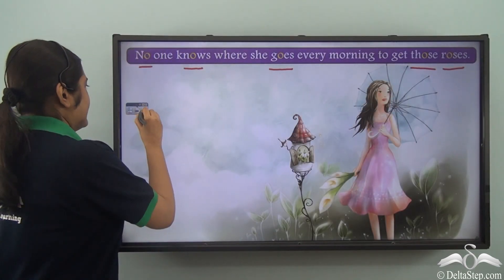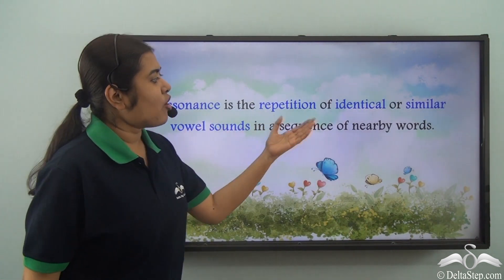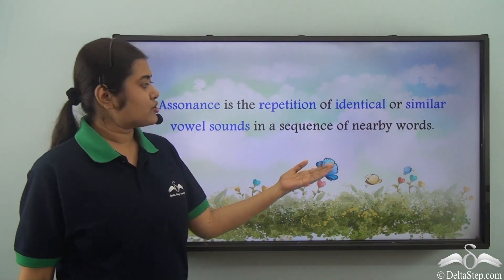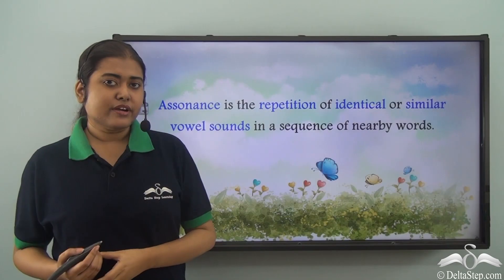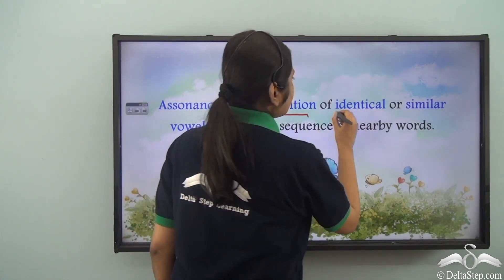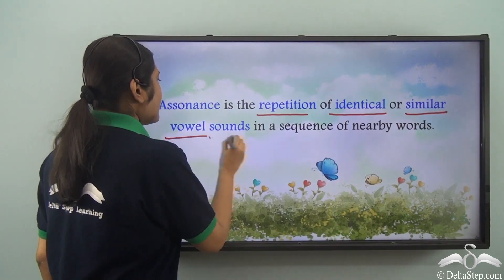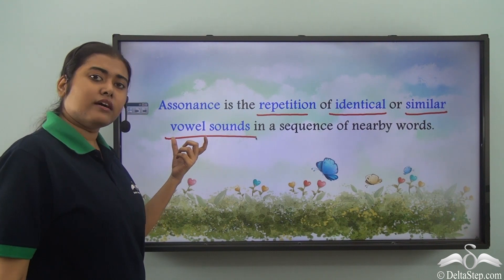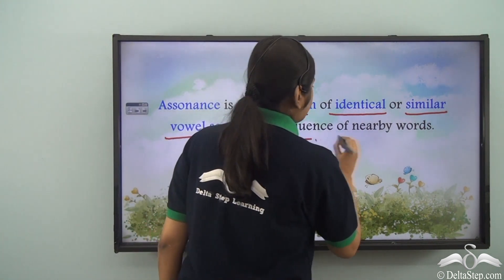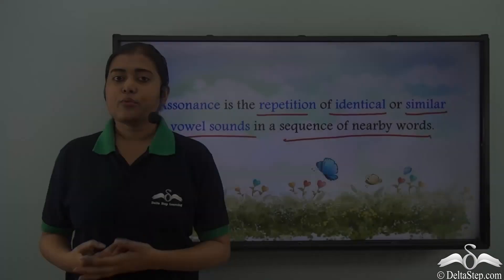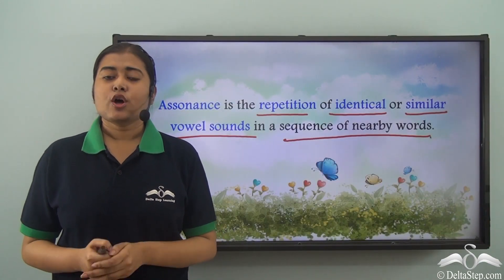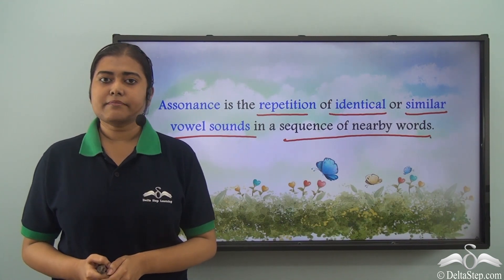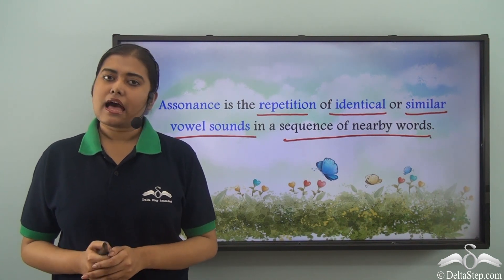So what is assonance? Assonance is the repetition of identical or similar vowel sounds in a sequence of nearby words. The important thing is the sound has to be a vowel sound and the words should be nearby. Whenever we come across such words which are placed nearby and have similar vowel sounds in them, they are said to show assonance.